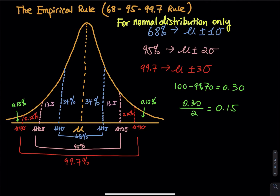First of all, mu is the mean — the center of the curve — and sigma is the standard deviation, which describes the spread of the curve.